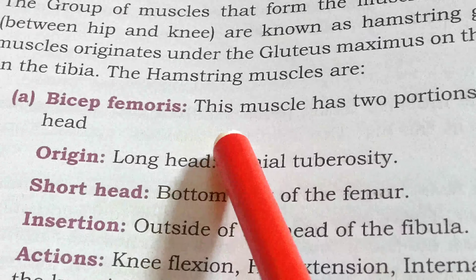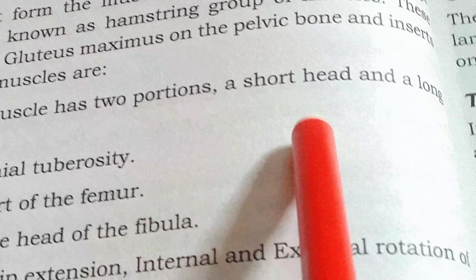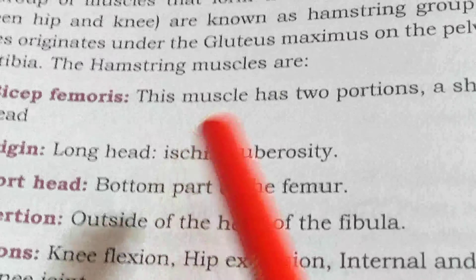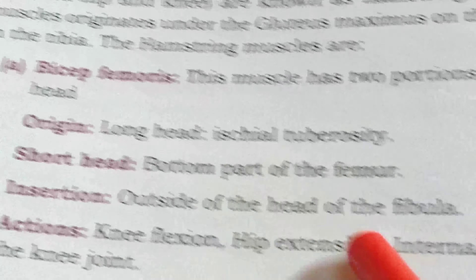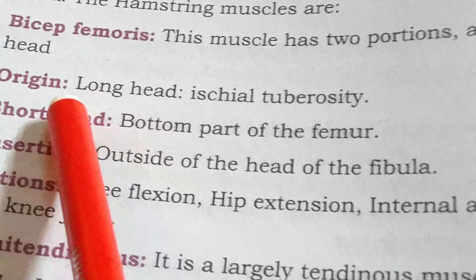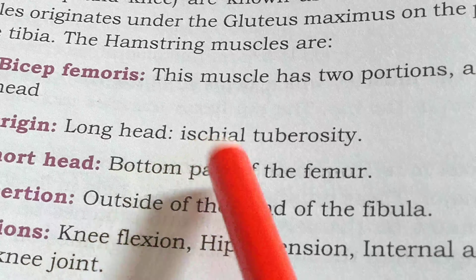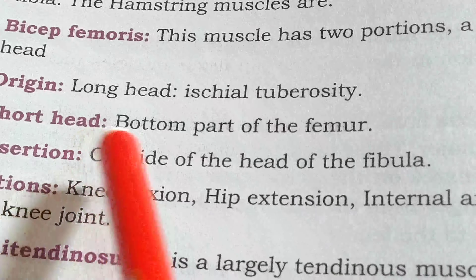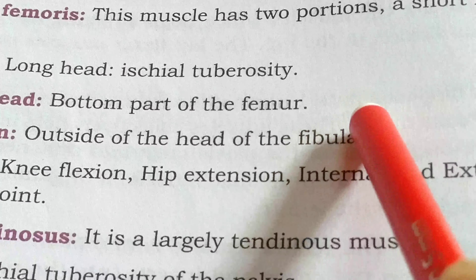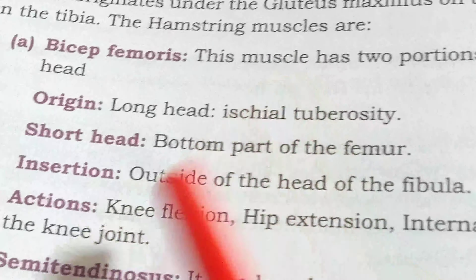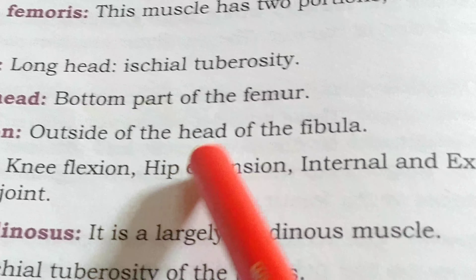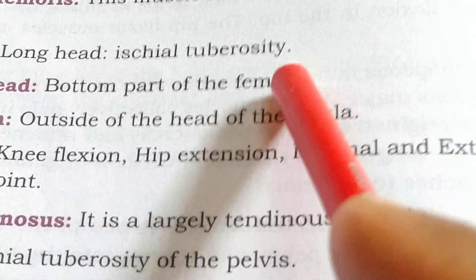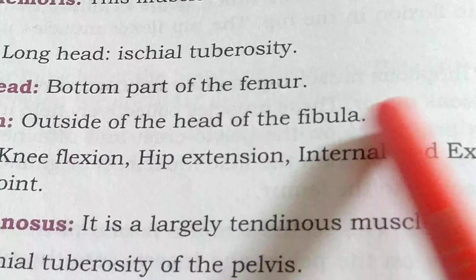Biceps femoris has two portions: a short head and a long head. The long head originates from the ischial tuberosity. The short head originates from the bottom part of the femur — the lower portion of the femur. The insertion is on the outside of the head of the fibula, so after originating from the femur, this muscle stretches all the way to the fibula.